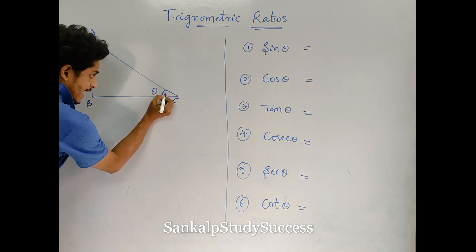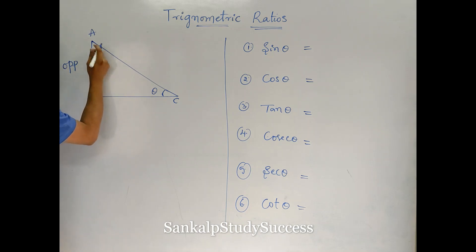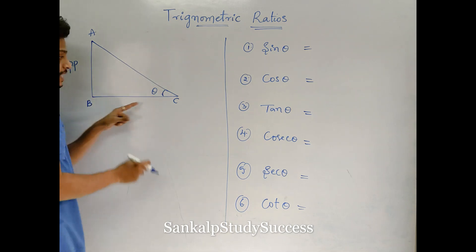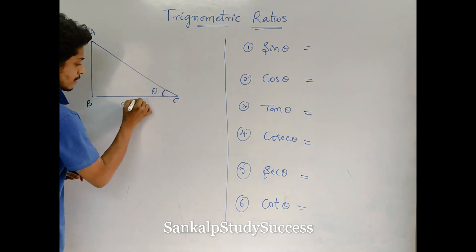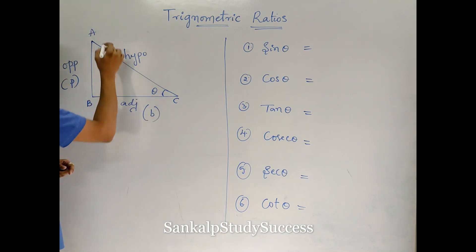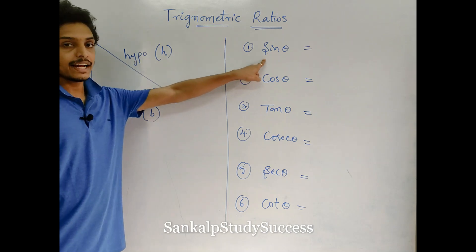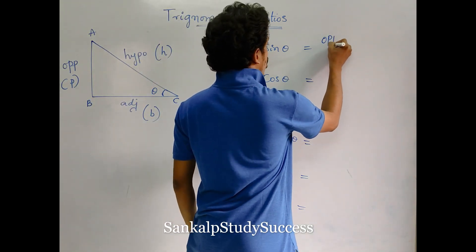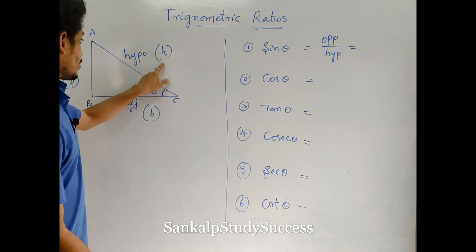Looking at the angle here, the opposite side of this angle is AB. If you have the side touching the angle, BC is the adjacent side, and the longest side is called hypotenuse. The opposite side is P, adjacent side is B, and hypotenuse is H. Sine is nothing but opposite side by hypotenuse — that is P divided by H.